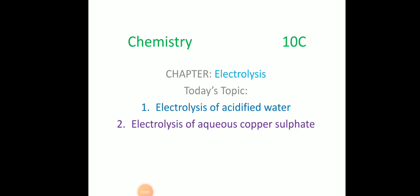Hello class. In our last class we discussed the electrolysis of copper sulfate solution. Today we are going to discuss two topics: electrolysis of acidified water using platinum electrodes, and electrolysis of aqueous copper sulfate solution using copper electrodes. In the first one, platinum is an inert electrode.